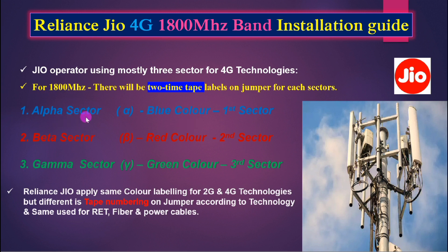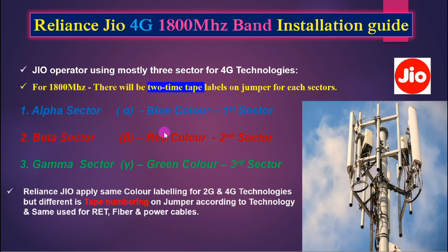Generally, since we are using three sectors, we can identify them by color. Blue color is the Alpha sector, red color is the Beta sector, and green color is the Gamma sector. Alpha is called the first sector, Beta the second sector, and Gamma the third sector. If you work with Jio, you need to know Alpha, Beta, and Gamma sectors. The same color labeling applies for both 2G and 4G technology.